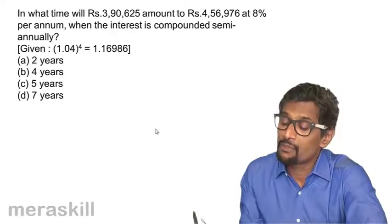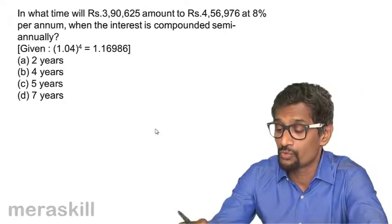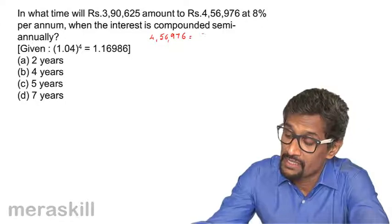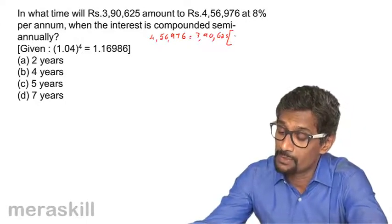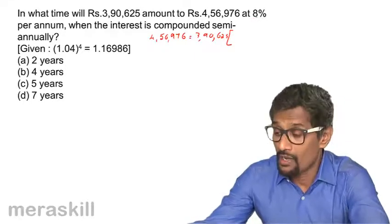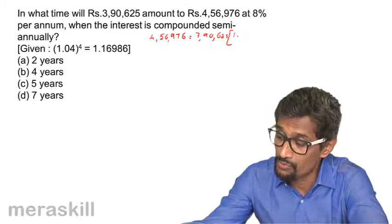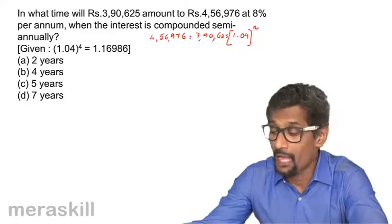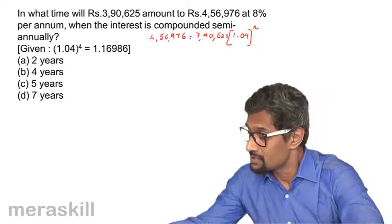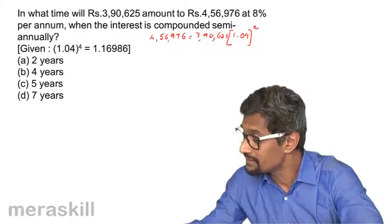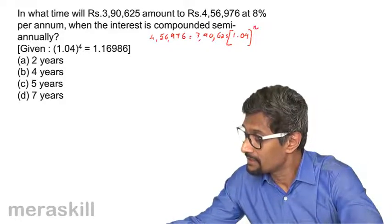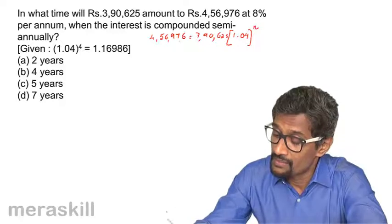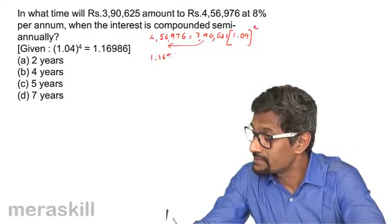In what time will rupees 3,90,625 amount to rupees 4,56,976? So amount 4,56,976 equals 3,90,625 into 1 plus 8% compounded semi-annually. That means for half a year the rate is going to be 0.04, so it's 1.04. We need to find out how many half years give this. So we take 4,56,976 divided by 3,90,625, which gives 1.16986.